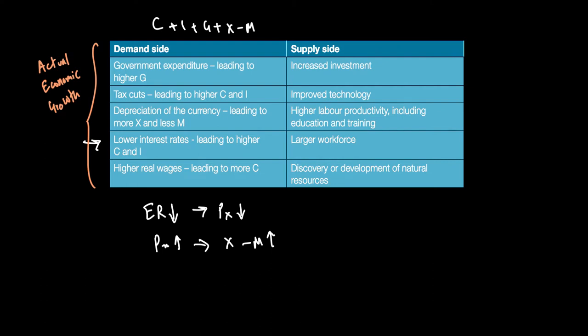Similarly, there could be higher real wages because of lower inflation, and that means more purchasing power, which can lead to higher consumption and therefore higher aggregate demand.